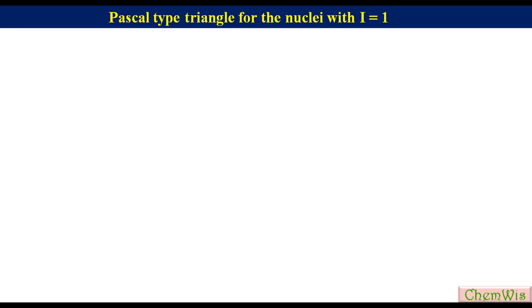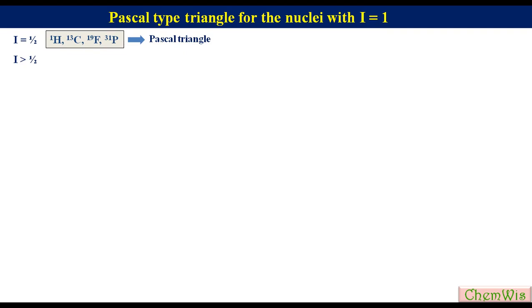Hello Friends. Today we are going to discuss Pascal type triangle for the nuclei with i equal to 1. The multiplicity and intensity of sub-peaks of an NMR signal due to first order coupling with a group of equivalent nuclei can easily be recalled using Pascal or Pascal-like triangle. For the nuclei with i equal to half, like 1H, 13C, 19F, and 31P, the Pascal triangle is used. But for the nuclei with i greater than half, we cannot use Pascal triangle — for these nuclei we use Pascal type triangle.